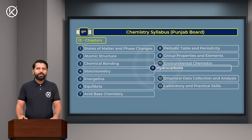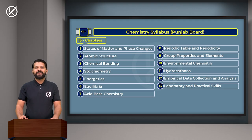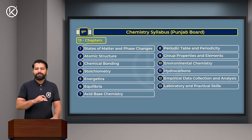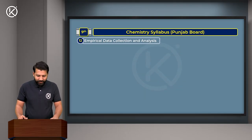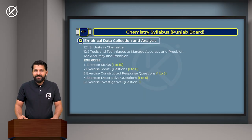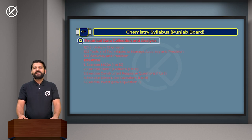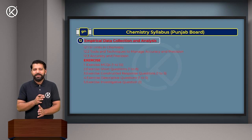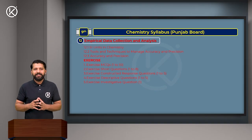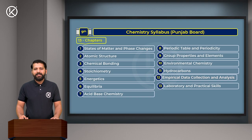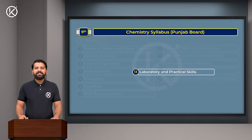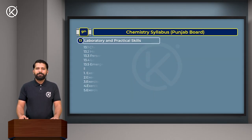Chapter 12 - Empirical Data Collection and Analysis - is completely excluded from our syllabus, so there is no need to spend any time on it. Similarly, Chapter 13 - Laboratory and Practical Skills - is also completely excluded from our syllabus.